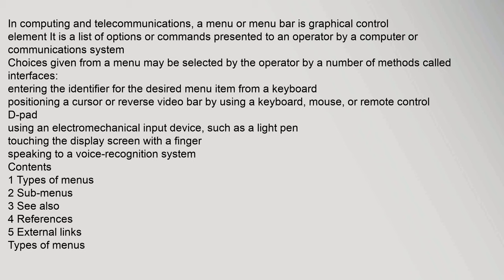It is a list of options or commands presented to an operator by a computer or communications system. Choices given from a menu may be selected by the operator by a number of methods called interfaces: entering the identifier for the desired menu item from a keyboard, positioning a cursor or reverse video bar using a keyboard, mouse, or remote control D-pad, or using an electromechanical input device such as a light pen or touching the display screen with a finger.